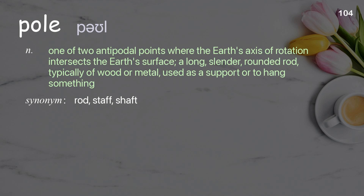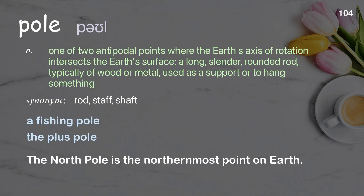Pole: One of two antipodal points where the Earth's axis of rotation intersects the Earth's surface; a long, slender, rounded rod, typically of wood or metal, used as a support or to hang something. Examples: a fishing pole, the plus pole. The north pole is the northernmost point on Earth.